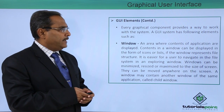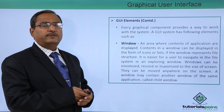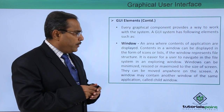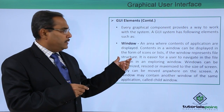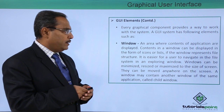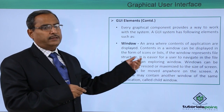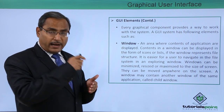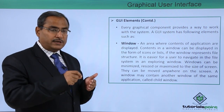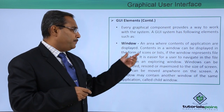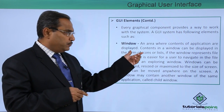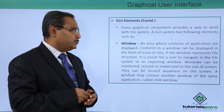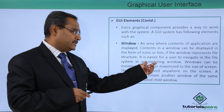Every graphical component provides a way to work with the system. The first element we are going to discuss is the window. An area where the contents of the application are displayed is known as the window. Contents in a window can be displayed in the form of icons or in the form of lists. If the window represents the file structure, it can show multiple files, folders, and subfolders accordingly.